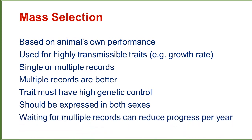In mass selection, we take single or multiple records. If we are going to make a decision on selection of an animal, the trait must be of high genetic control, and the trait must be expressed in both sexes — female and male. If we wait for multiple records it can reduce progress per year, but keeping multiple records helps us make faster progress.